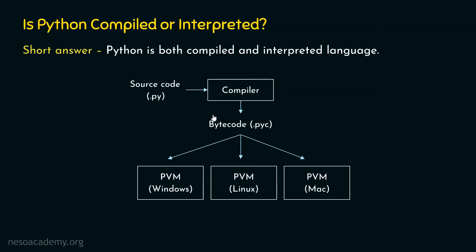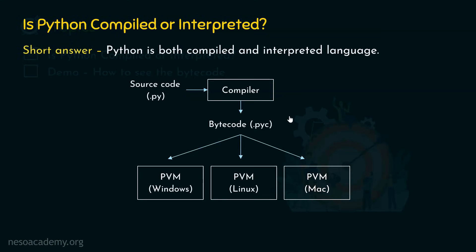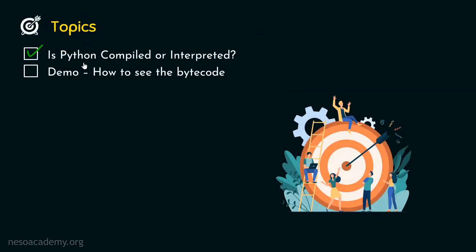Now we know how the translation works, and we also know that Python is both compiled and interpreted language. In the definition, I told you that Python is an interpreted language, but that is not the complete truth — Python is both compiled and interpreted. Now you know the complete truth, and we are done with this topic.